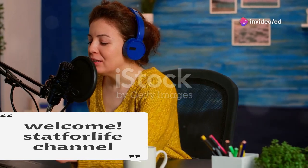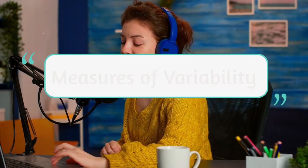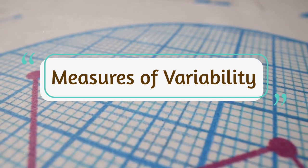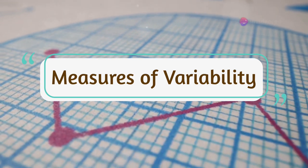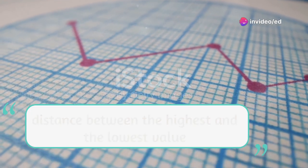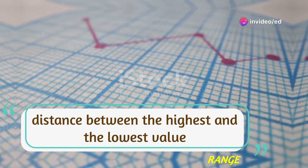In this video, let us know what is measures of variability and its measures. Variability refers to how spread out scores are in a distribution, indicating the amount of spread around the mean. There are several key measures of variability used in statistics to describe this dispersion.